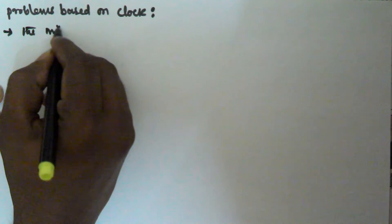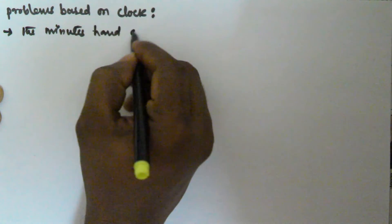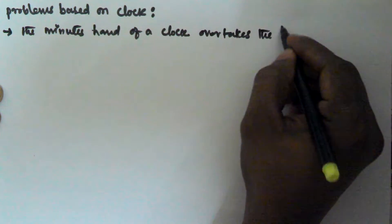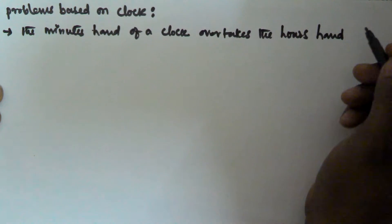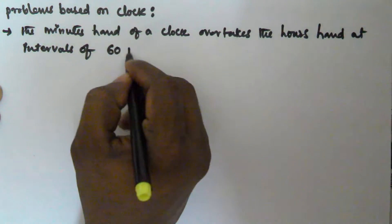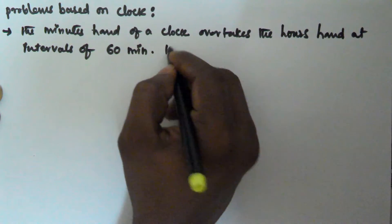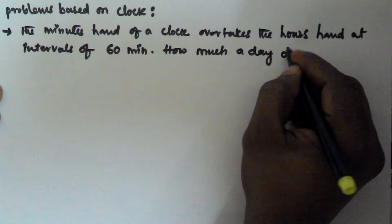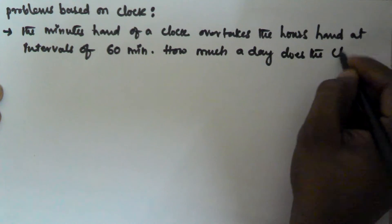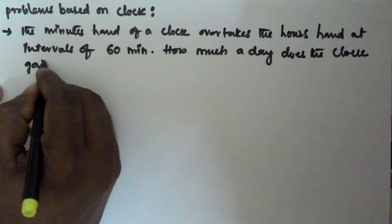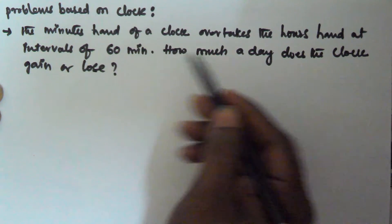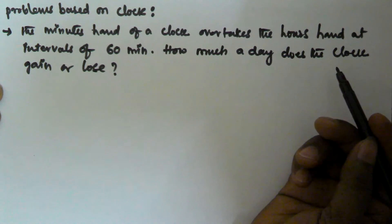The problem is: the minutes hand of a clock overtakes the hours hand at intervals of 60 minutes. So how much a day does the clock gain or lose? The minutes hand of a clock overtakes the hours hand at every interval of 60 minutes — so how much a day does the clock gain or lose?